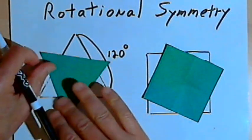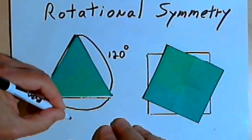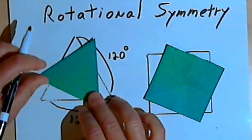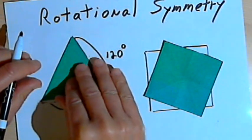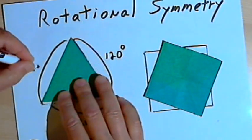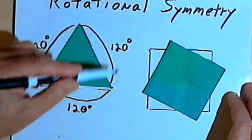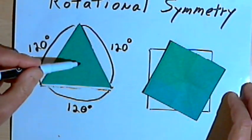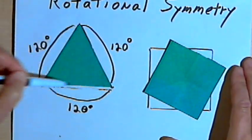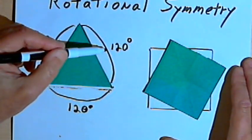I could rotate it another 120 degrees, another third, and it matches. I could rotate it again and it will match. Now the smallest number of degrees I need to rotate that triangle around until it matches was 120 degrees. So we say that this equilateral triangle has 120-degree rotational symmetry.